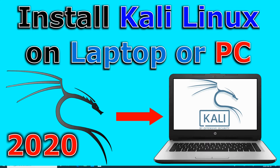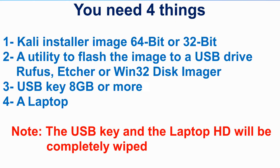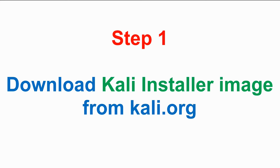In this video I want to show you how to install Kali Linux on a laptop or a PC step by step. You need four things to achieve this: first, the Kali installer image 64-bit or 32-bit; second, a utility to flash the image to a USB drive — you can use Rufus, Etcher, or Win32 Disk Imager; third, a USB key that is 8 GB or more; and of course a laptop. Note that the procedure will wipe the USB key and the hard disk entirely, so make sure there is no data you need on either.